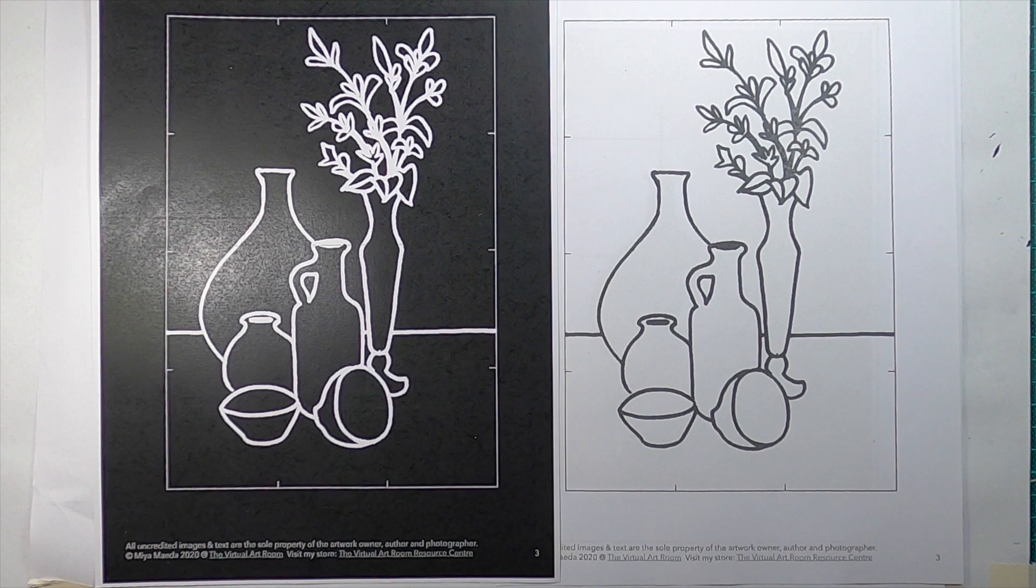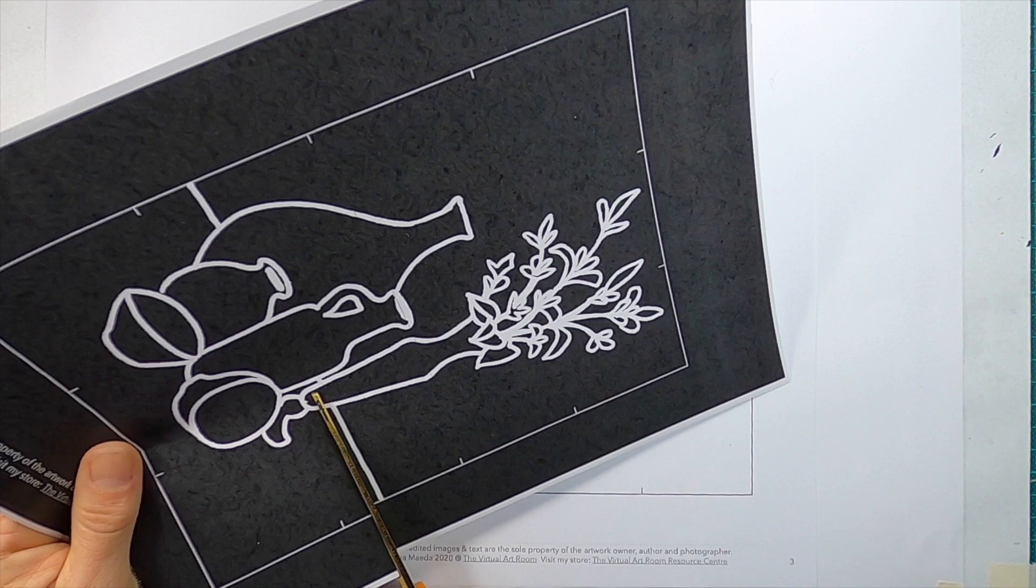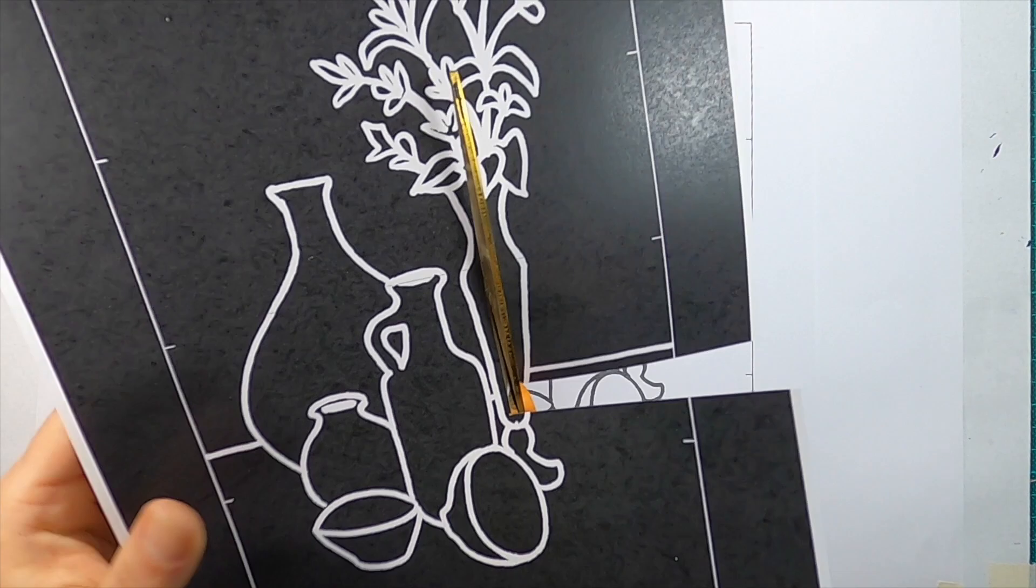I did this on the copier or you can use a photo editing app to create a negative of your image. Now I have a positive and negative image and I'm going to cut and collage them together to create a new design.